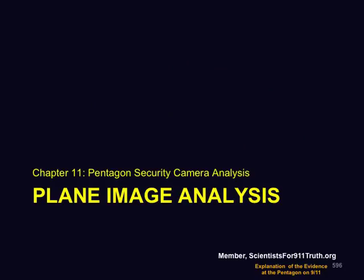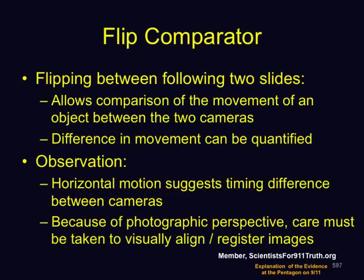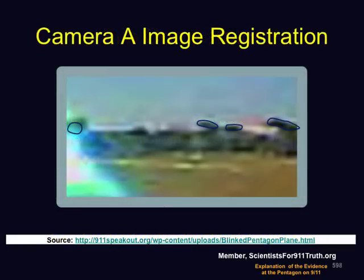Plane image analysis. Flipping between two adjacent slides allows comparison of the movement of an object between the two cameras, and the difference can be quantified. Our observation is that the horizontal motion suggests a timing difference between the cameras. Because of the slight difference in perspective, care is needed in aligning the images. To register the frames, we will be using the treetops, which are visible in both camera views.